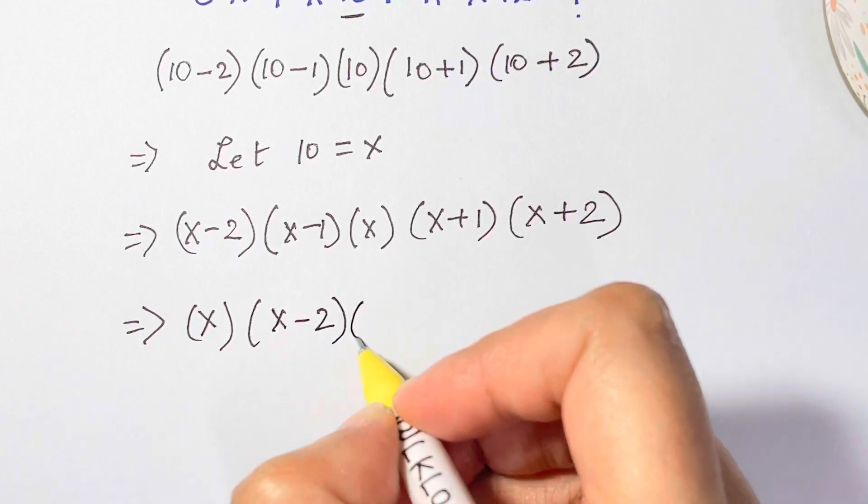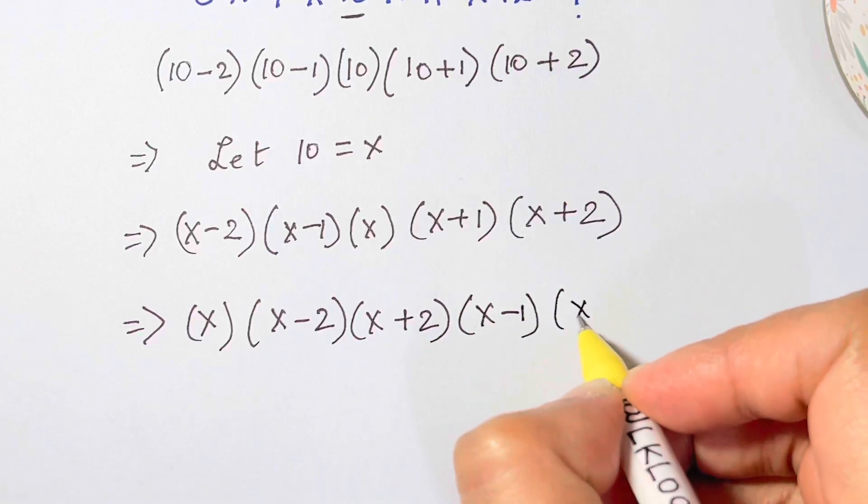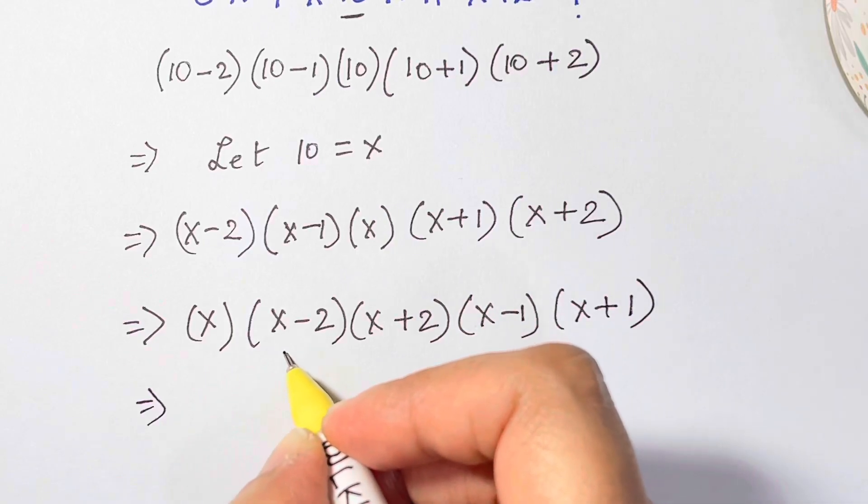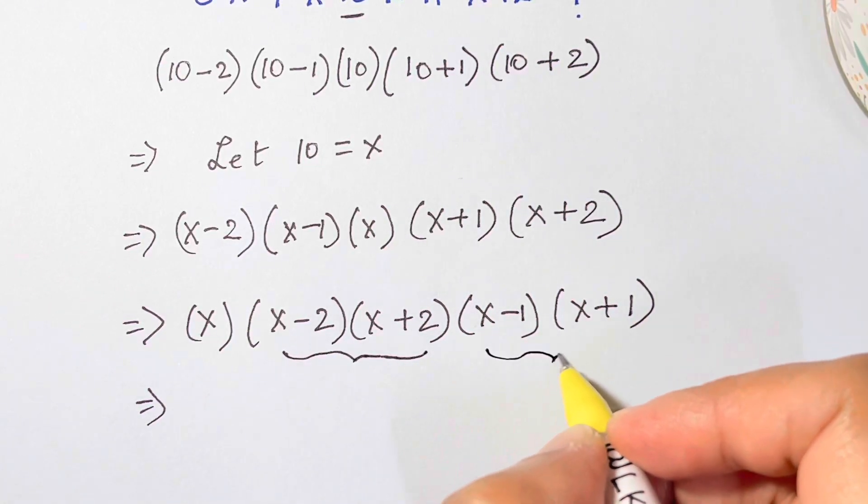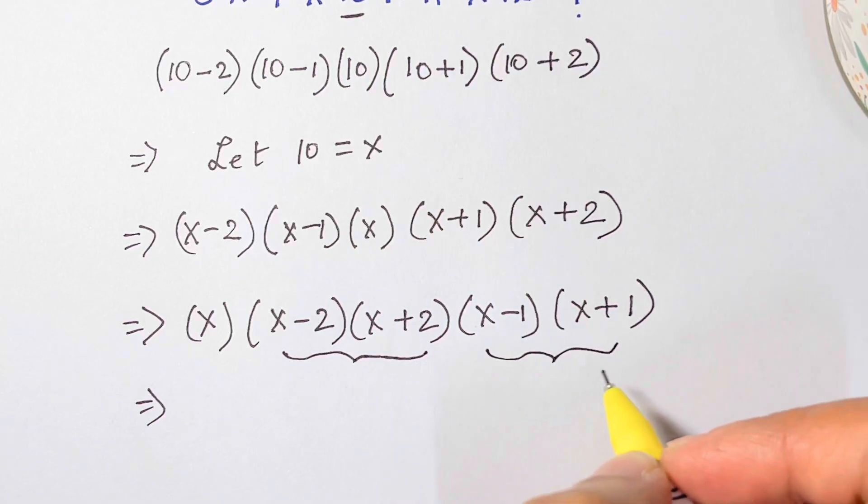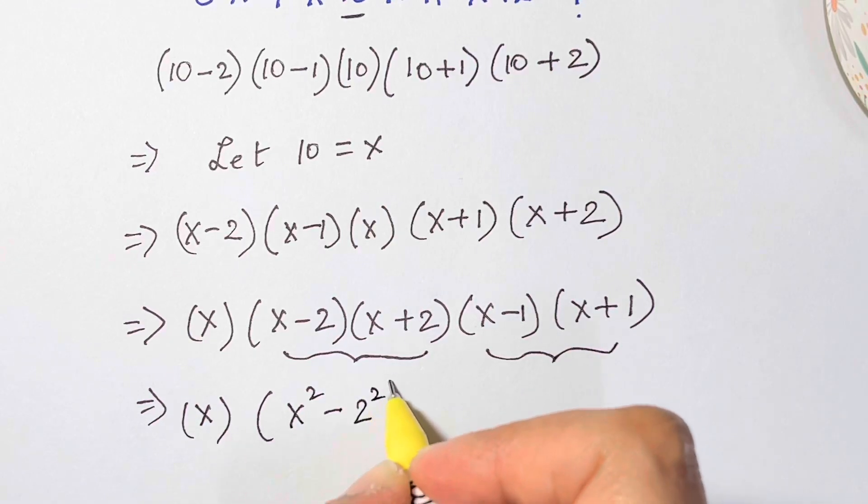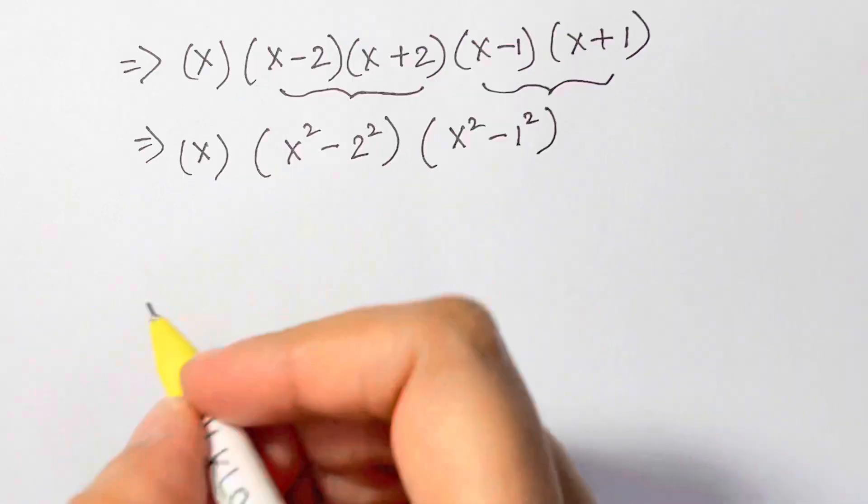Now if you see, this is an identity: a + b times a - b, and this as well. So that's a² - b². So x times (x² - 2²) and this is (x² - 1²).